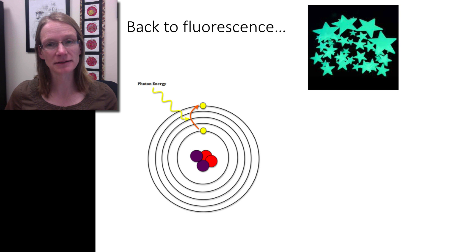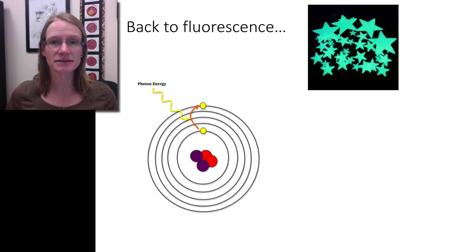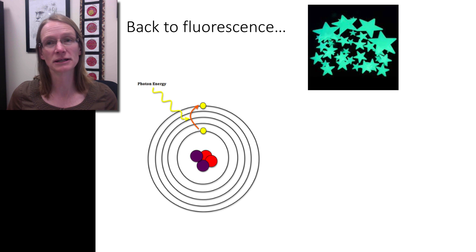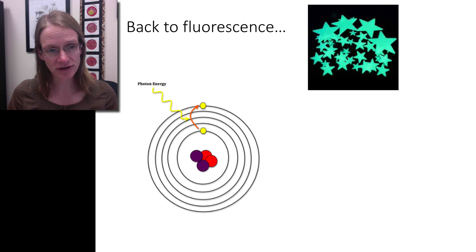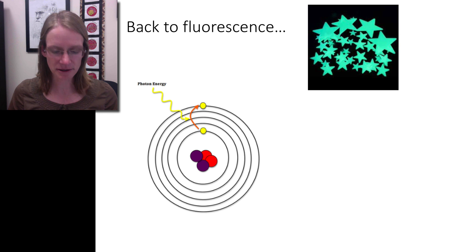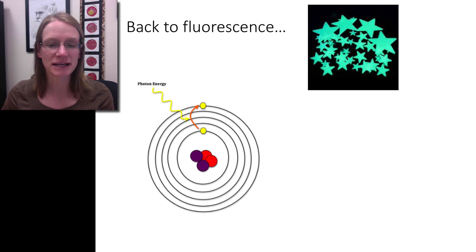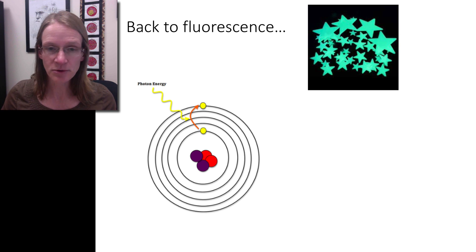Let's go back a little bit to fluorescence. We had those stars and we said okay, we take the star and we put it in the light, and then it really glows once we actually see it in the dark. What's actually going on with each of these things? Well, the electrons, as we've already talked a little bit about these subatomic particles, is really where the energy actually is in an atom.